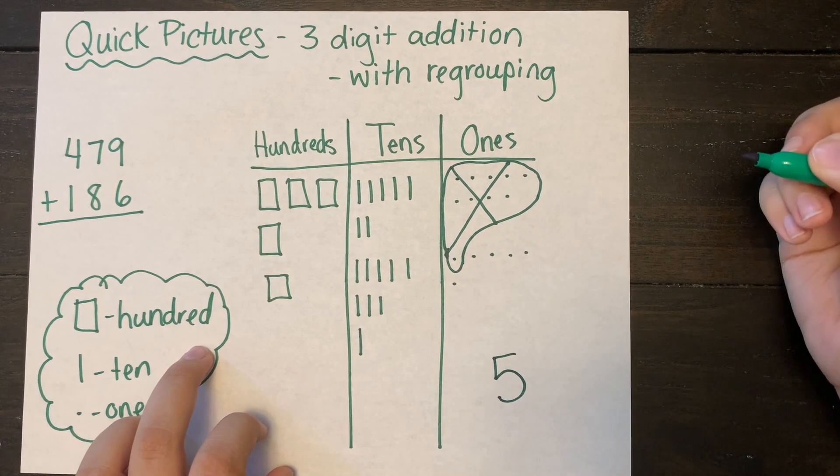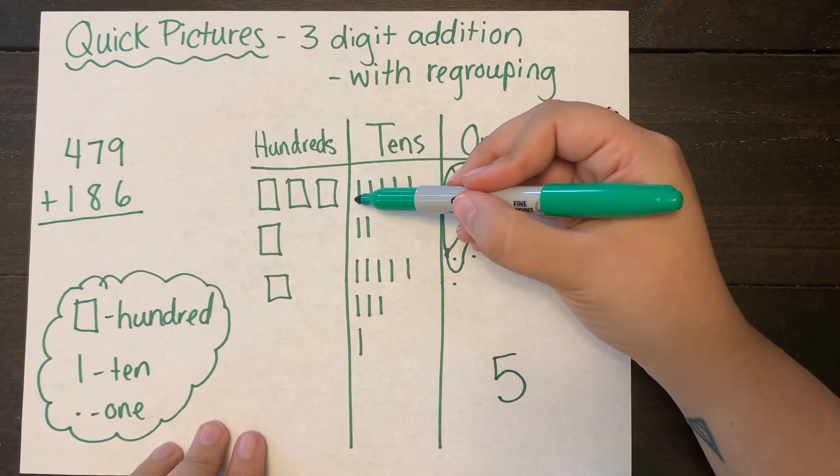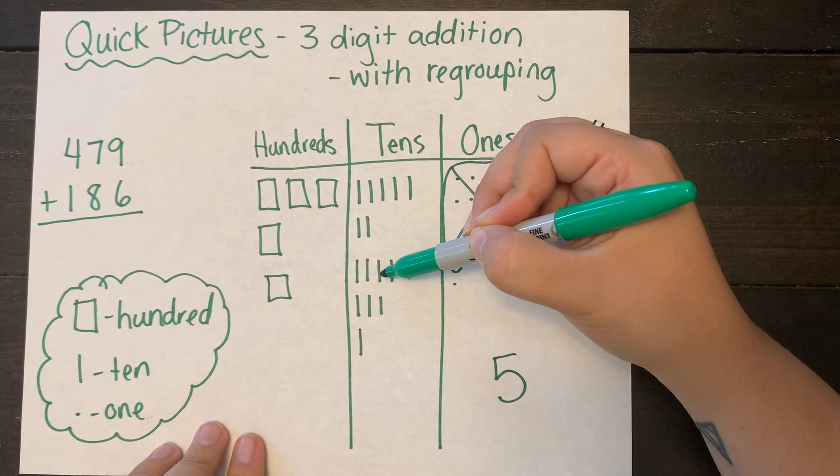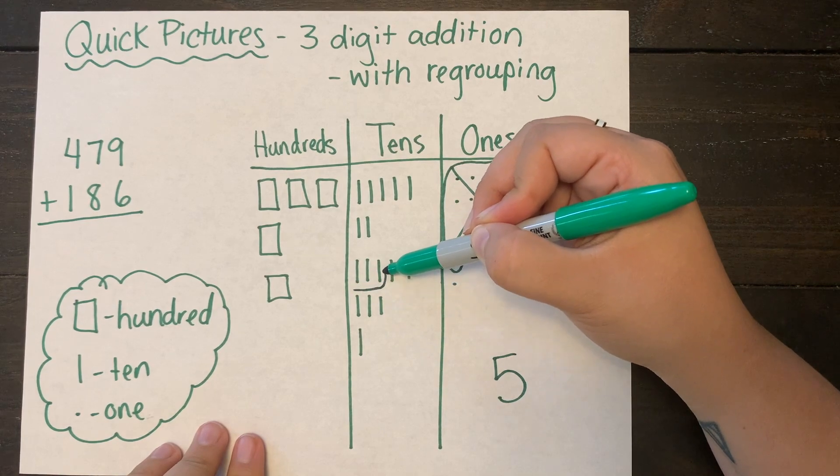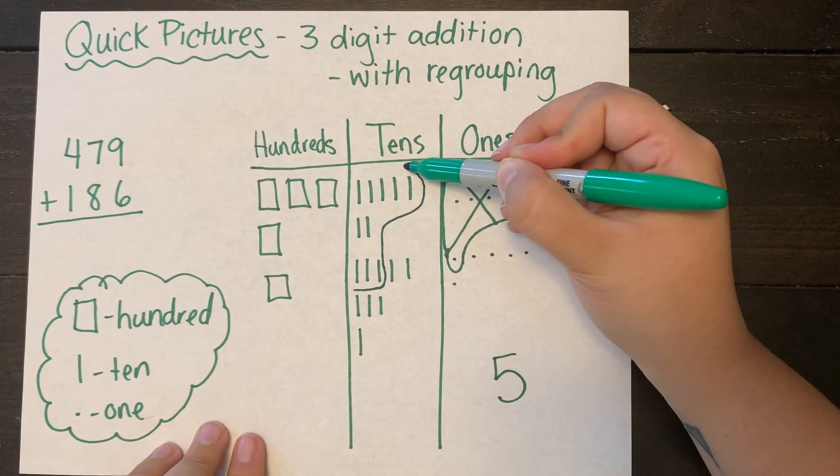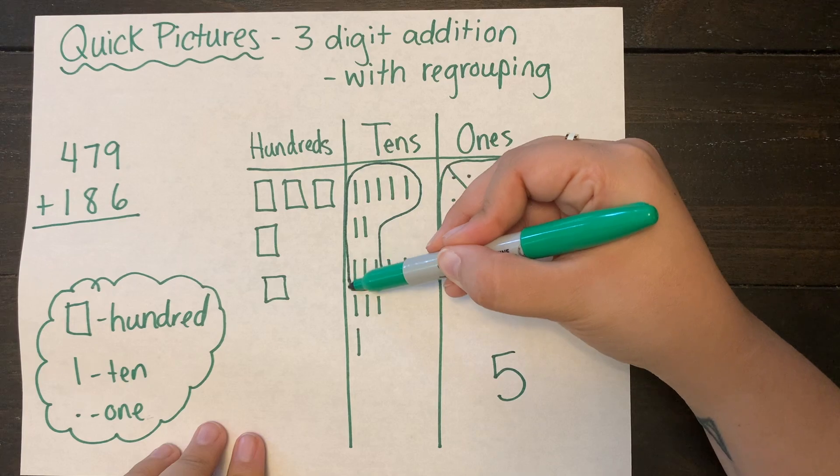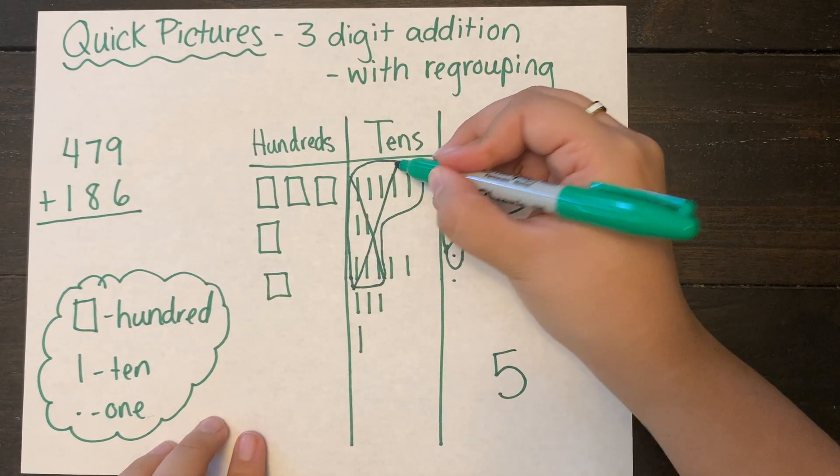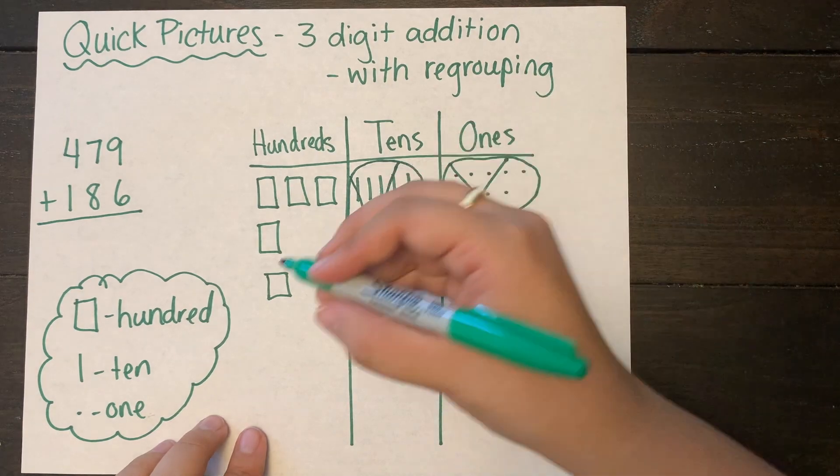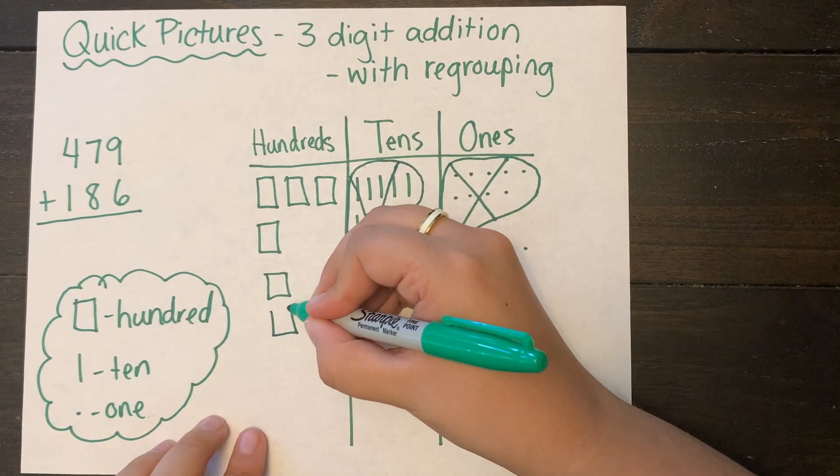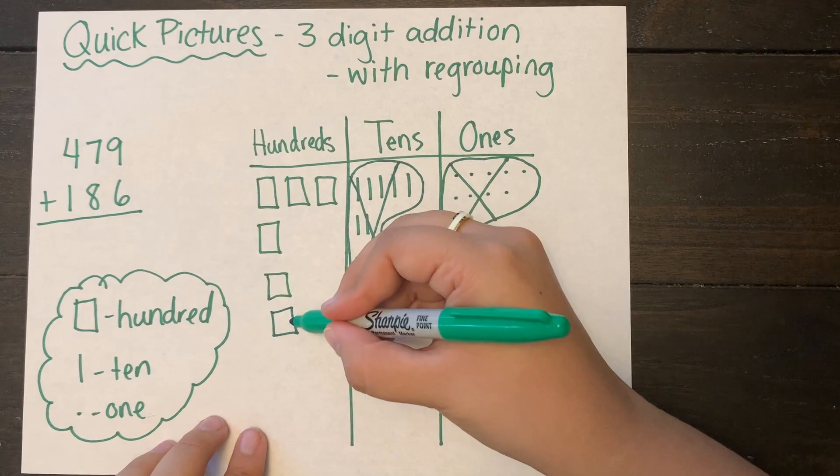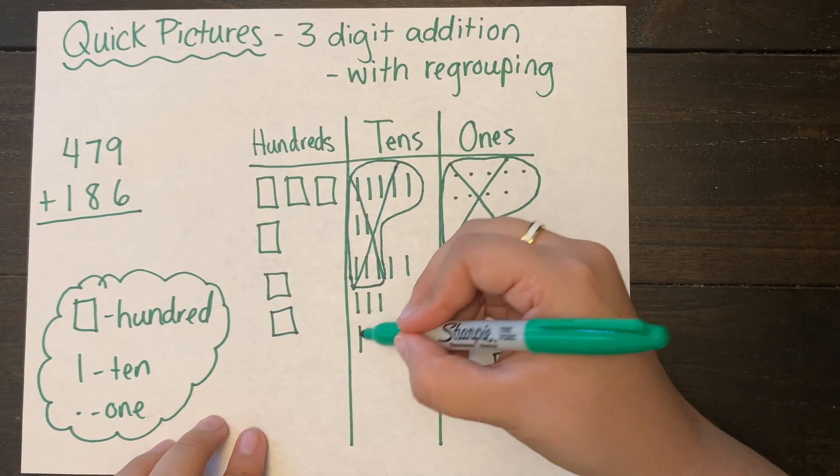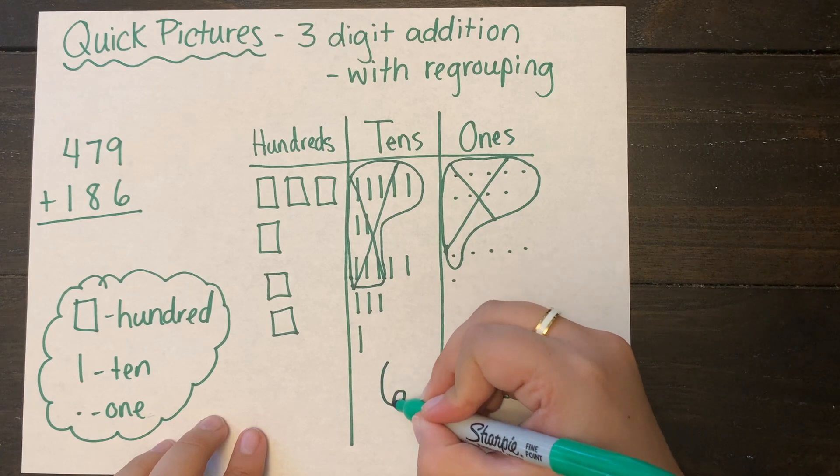So I'm going to look at my tens column and I see I definitely have more than ten tens. So I'm going to take ten tens, I'm going to circle them, and I'm going to regroup those ten tens as one hundred in the next column over. And I'm crossing out those tens so I know that I moved them from the tens to the hundreds column. I count up my tens left, I have six tens remaining.